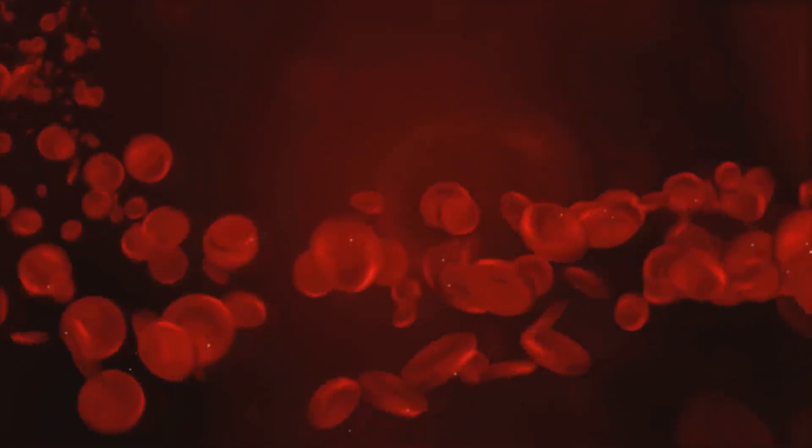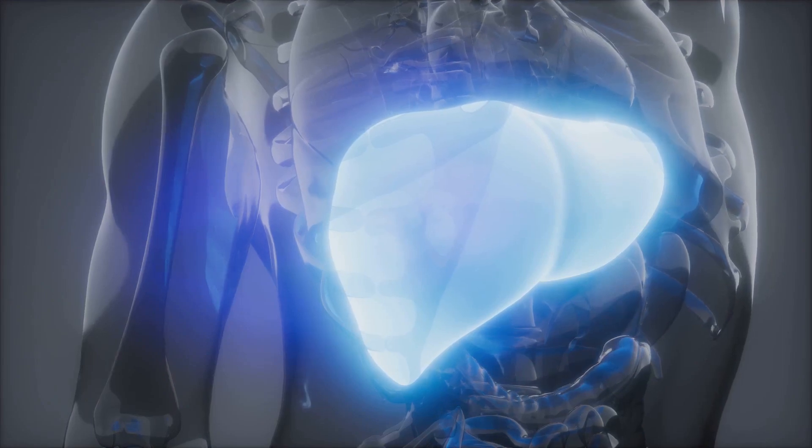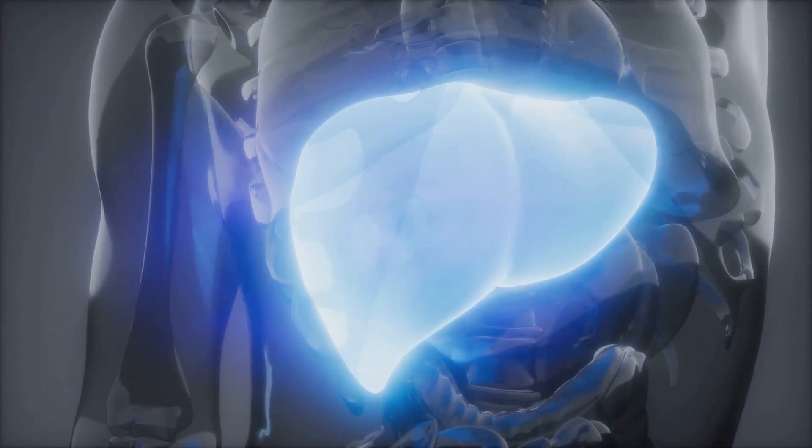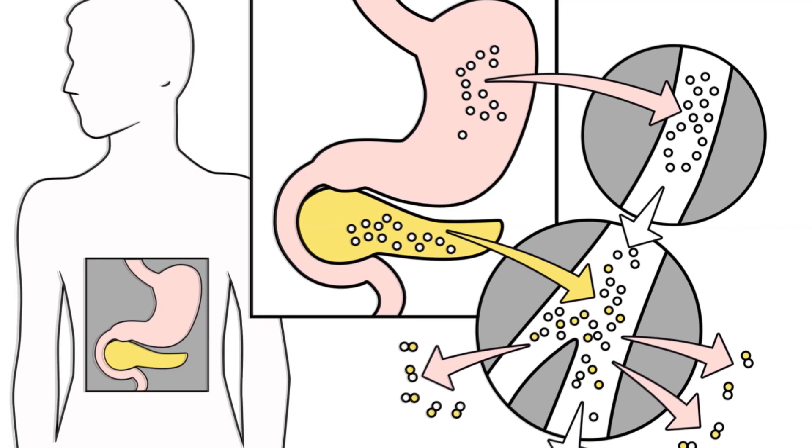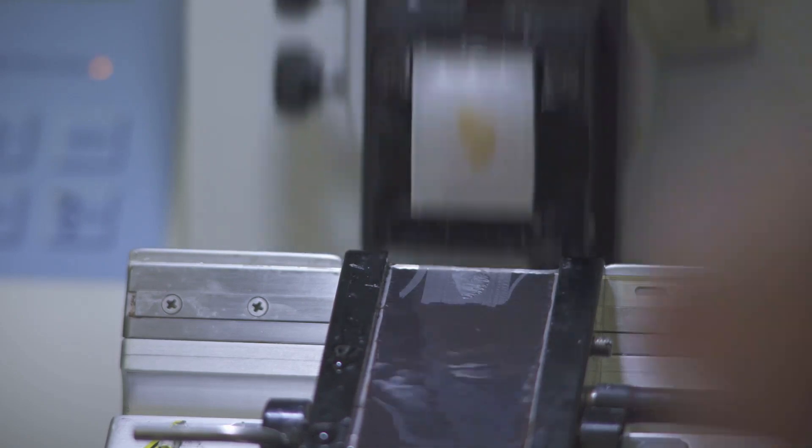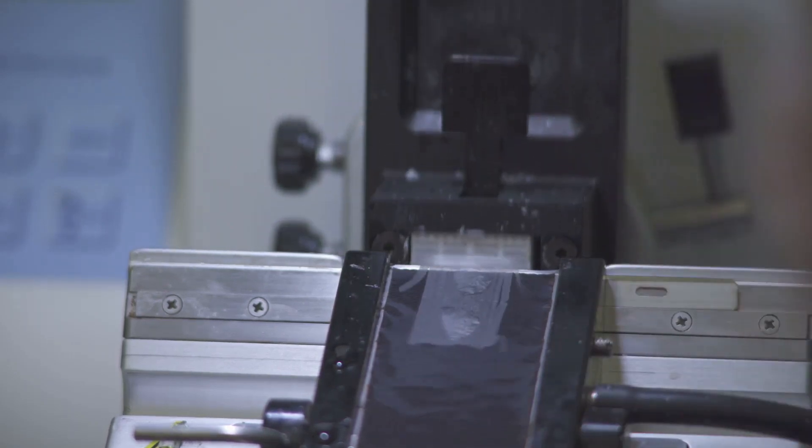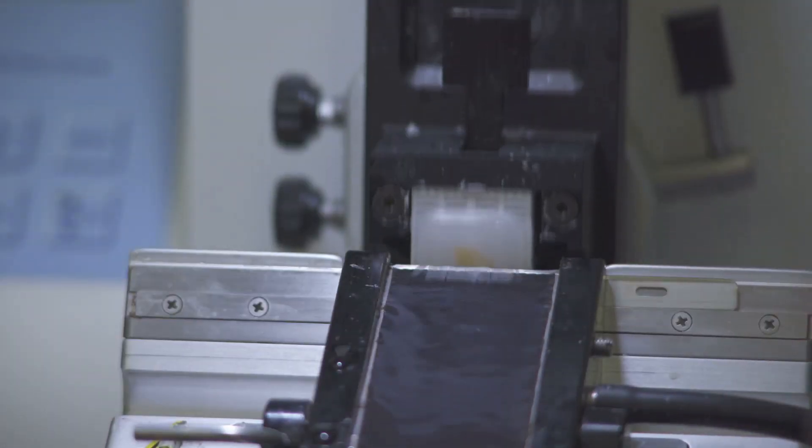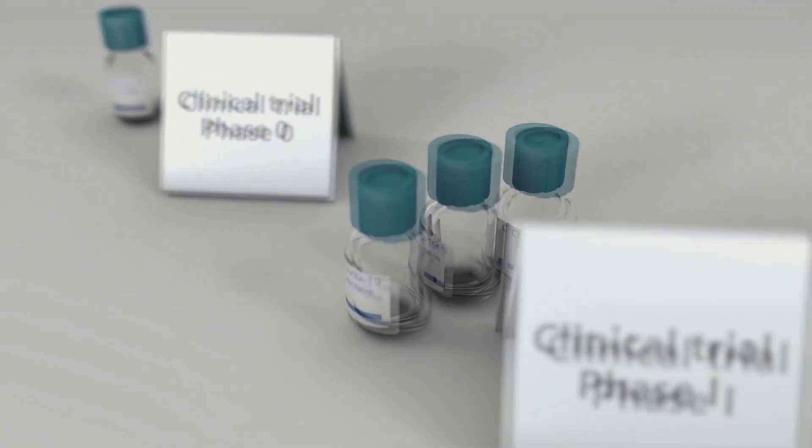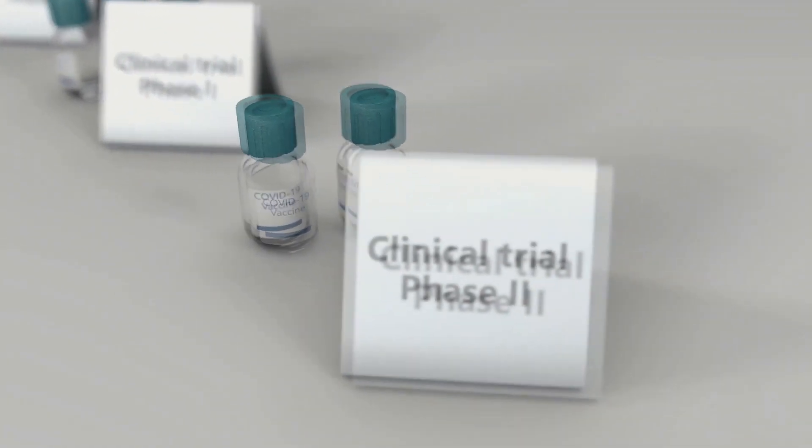Once absorbed into the bloodstream, the drug encounters the liver, a metabolic powerhouse that can further modify or eliminate the drug. This first-pass metabolism can significantly reduce the amount of drug that ultimately reaches the systemic circulation and its target site. Overcoming these barriers and ensuring adequate absorption is a critical challenge in oral drug delivery.